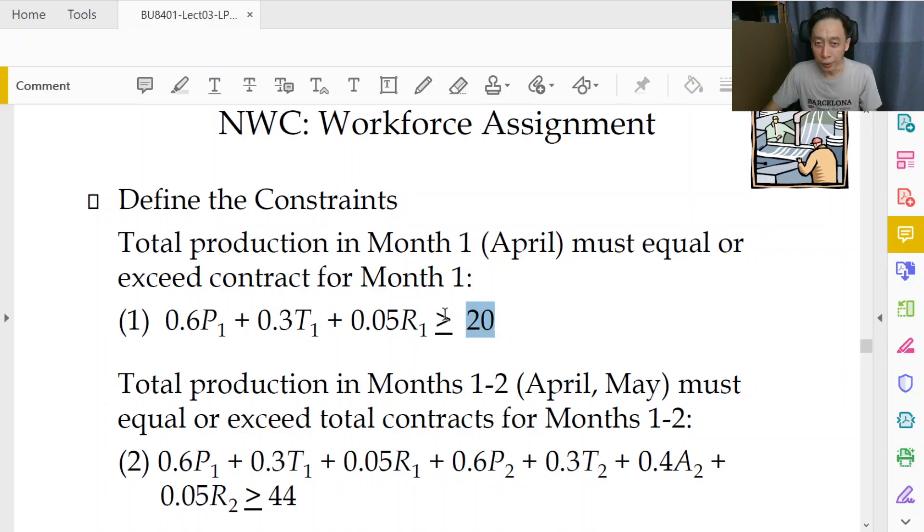Now if we put equal sign here, this is very important. If we put equal sign here, then two things happen. One is that from the modeling perspective we are expressing the scenario or the desire that whatever we produce is just enough—in fact no more. Even if you can produce more, don't produce. It says equal, so give me enough production workers, trainers, recruits such that I get exactly 20 wings.